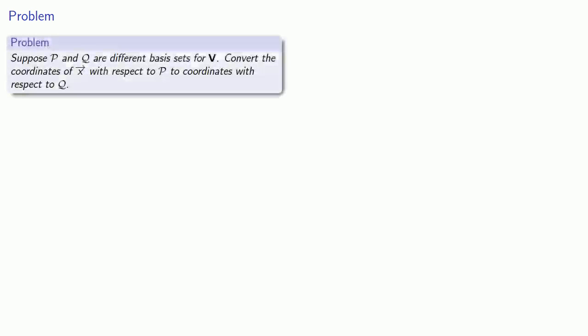Since it's possible for there to be more than one basis for a given vector space, suppose I have two different basis sets for our vector space. We might consider the following problem: to convert the coordinates of x with respect to one basis into coordinates with respect to the other basis. So in order to solve this problem, we'll need to set up and solve a system of linear equations.